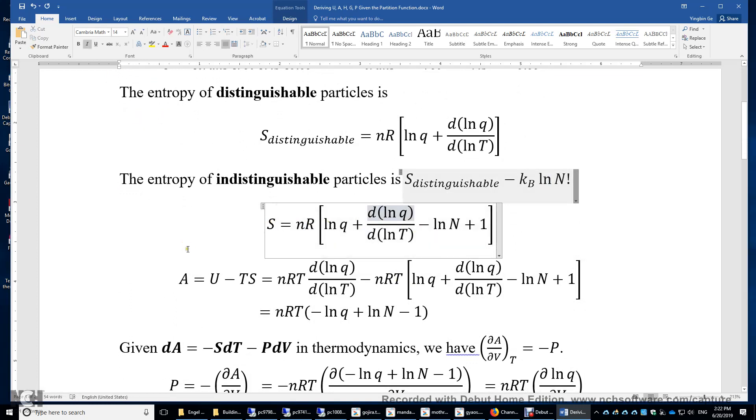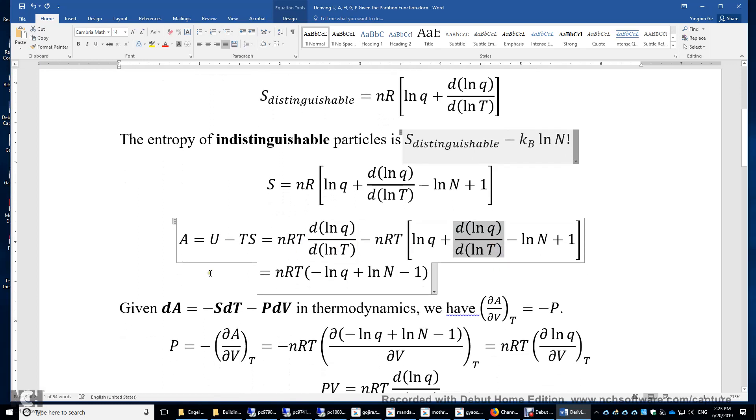And then we have the expression of the Helmholtz free energy A. By definition, A equals U minus TS. So this is U, this part is TS, and we combine these two. This term and this term cancel. So the expression of A is nRT times negative Lnq plus the natural logarithm of n and then minus 1.